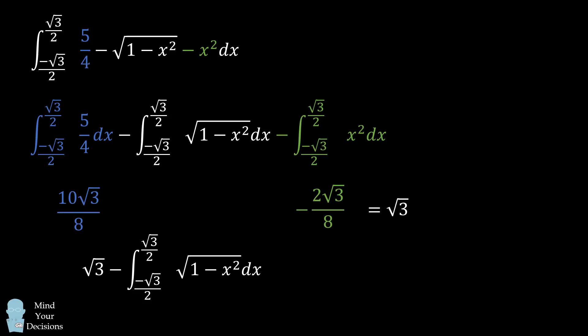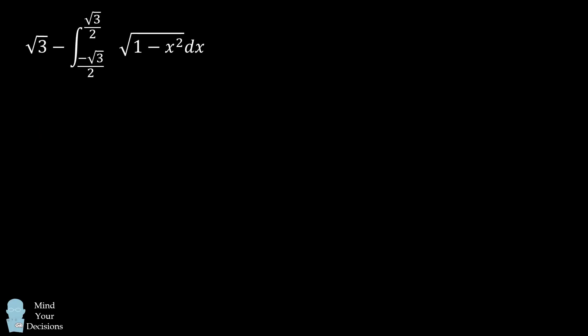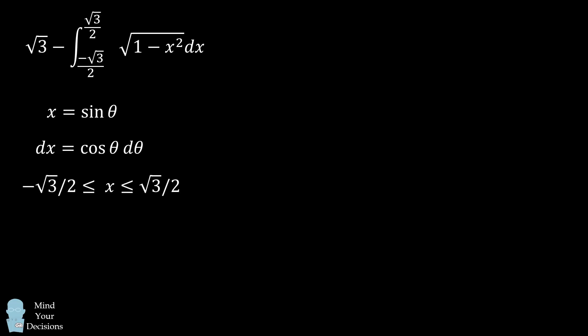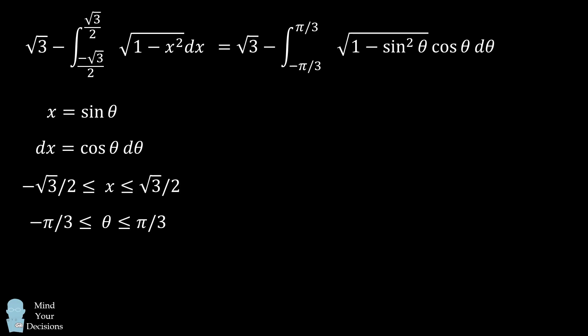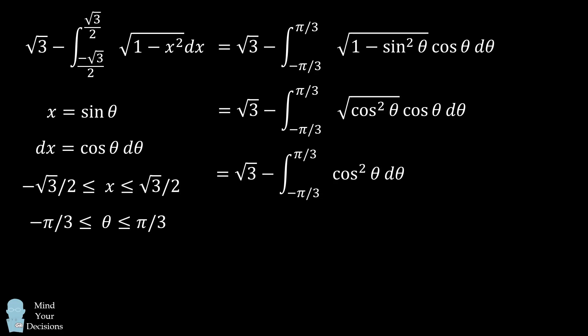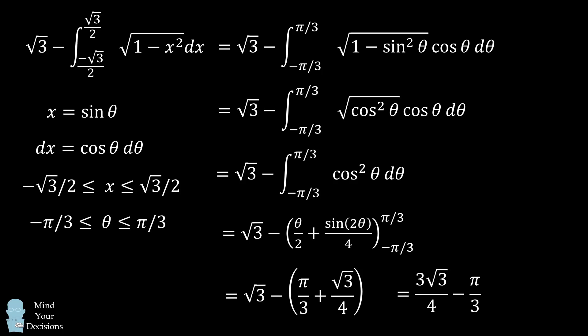For the remaining integral, we use a trig substitution: x equals sine theta, so dx equals cosine theta d theta. As x goes between negative √3/2 and positive √3/2, theta goes between negative pi/3 and positive pi/3. After the substitution and applying trigonometric identities, we end up with the integral of cosine squared theta, which is standard to evaluate. The final answer is the same as before: (3/4)√3 minus pi/3.